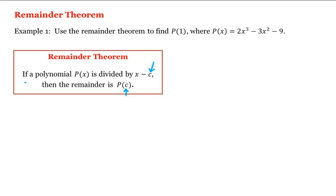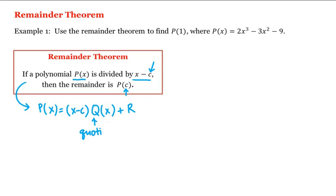Let's think about why this is true. By the division algorithm, when we divide p of x by x minus c, then p of x is equal to x minus c times some polynomial q of x, plus a constant r, where q is the quotient and r is the remainder. The reason this remainder is a constant is because it must be one degree less than the divisor, which is degree one, so r must be degree zero — a constant.